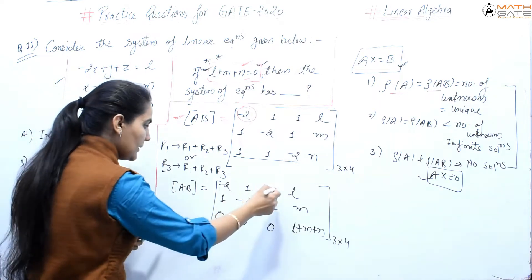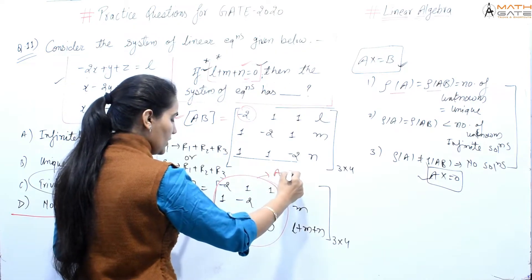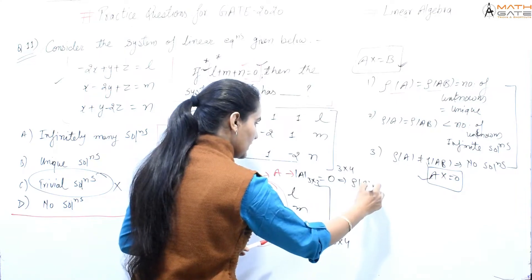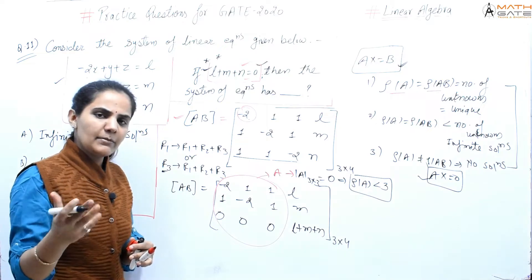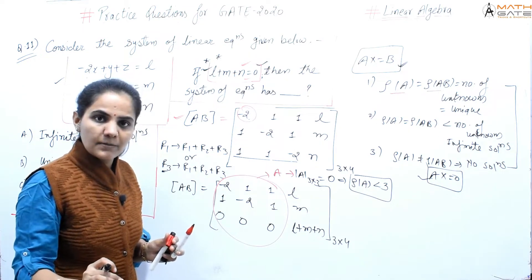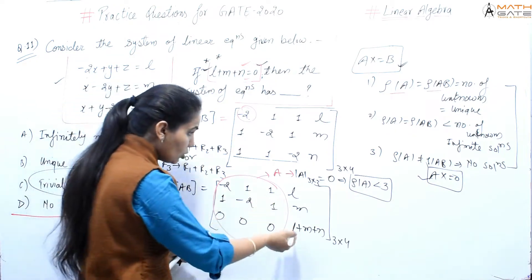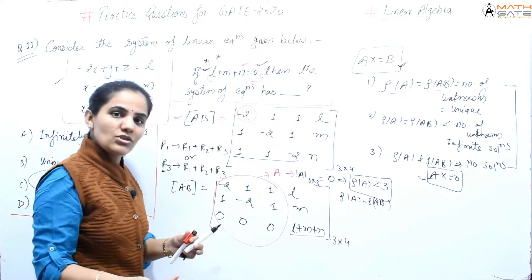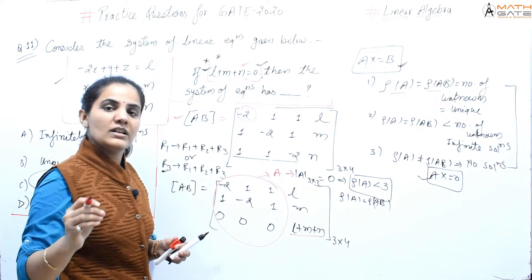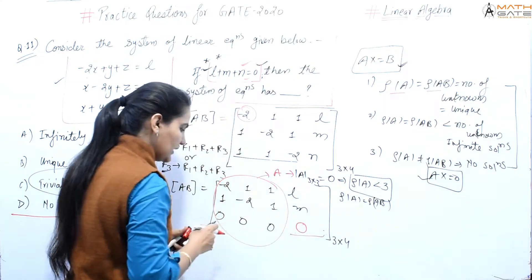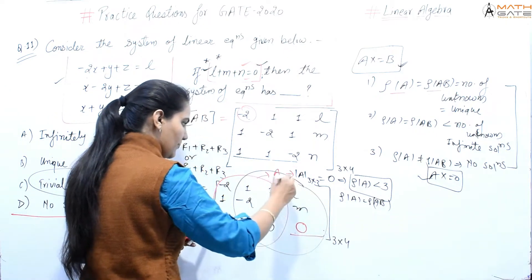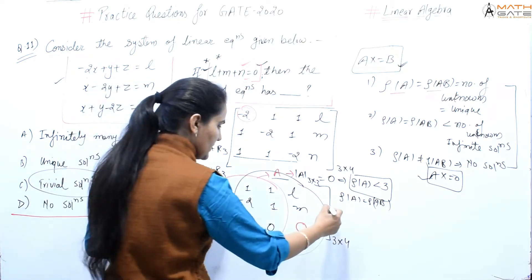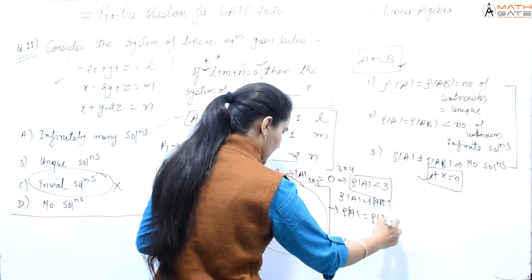Now observe: matrix A is 3 cross 3. Its determinant is 0 — meaning rank of A is less than 3. Now for matrix [A|b]: its 3 cross 3 minor determinant is also 0 because the last row of the augmented matrix becomes all zeros when l plus m plus n equals 0. So the rank of [A|b] is also less than 3. Using determinant properties, if the 3 cross 3 determinant is 0, the matrix rank is less than 3.